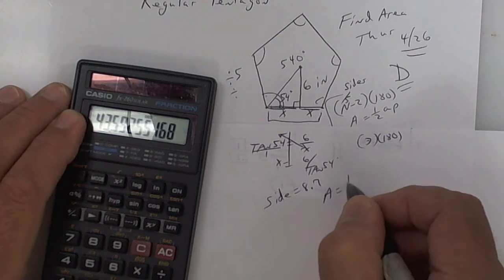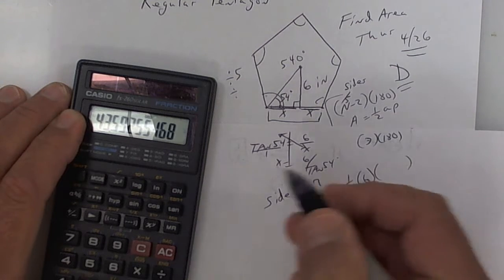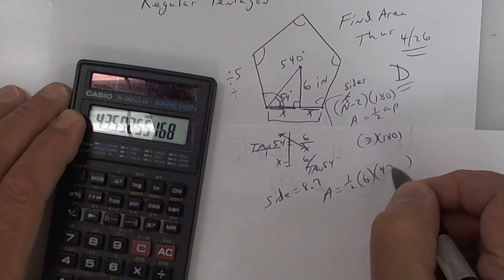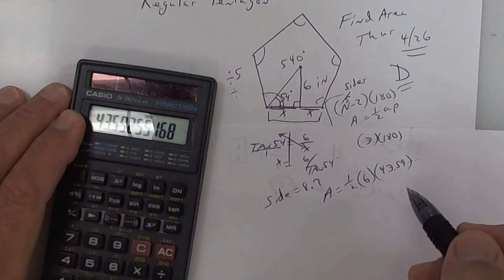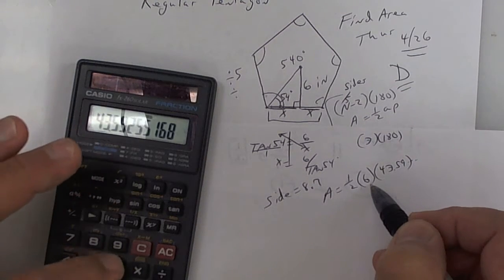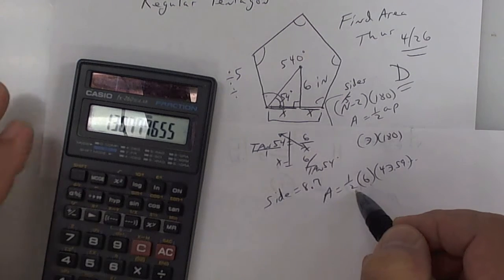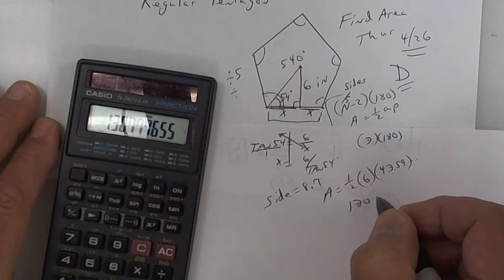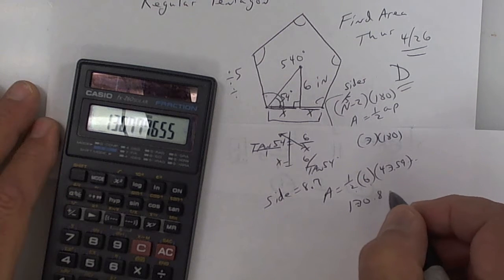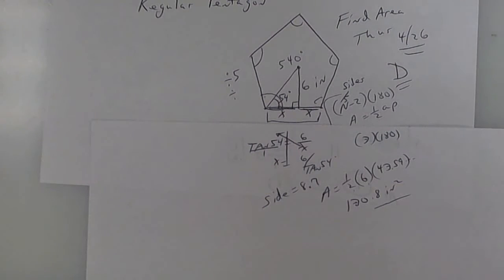Area equals one half the apothem, which is six, times the perimeter, which is 43 and so on. We're going to leave all that on the calculator, then times six, press equals, and then divide by two. The area is 130.8 square inches. That is the area of that regular polygon, and that's how you work that problem.